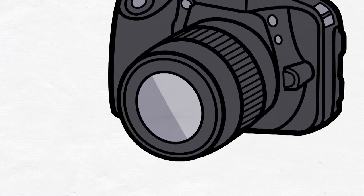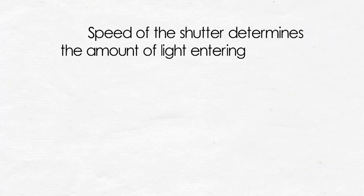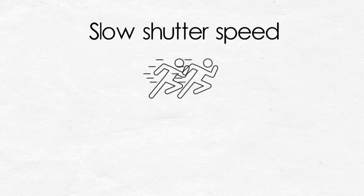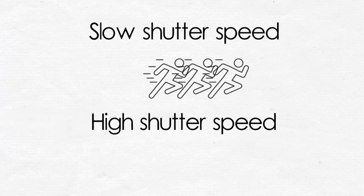Shutter, literally speaking, is a door that allows the image to be recorded, either on film or digital sensor. The speed of the shutter determines the amount of light entering the camera. Higher the speed, lesser is the light entering into the lens. Slower shutter speeds allow blurring the motion, while higher shutter speeds freeze the action.